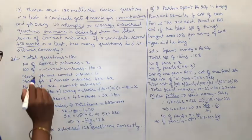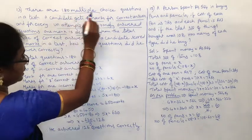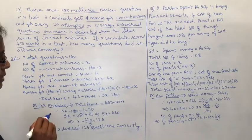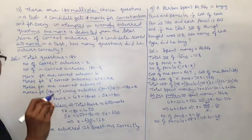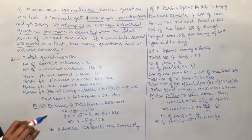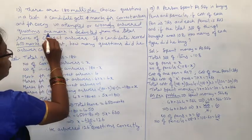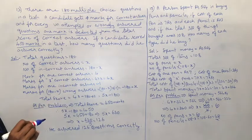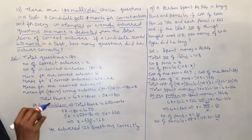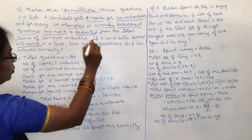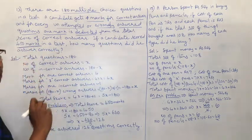In one test there are 180 multiple choice questions. For every correct answer they give 4 marks, and for a wrong answer or unattempted question, minus 1 mark is deducted from the total score.